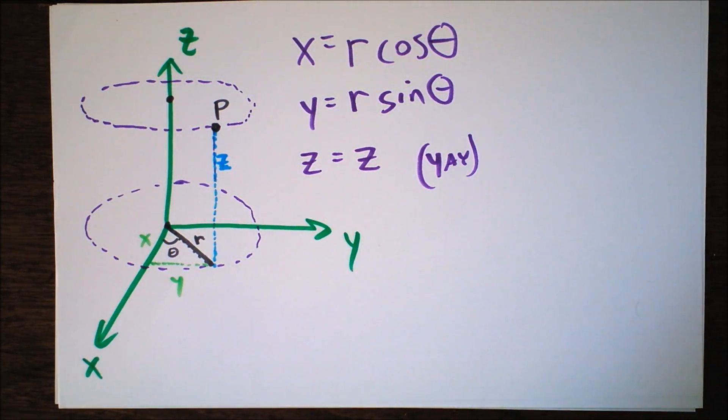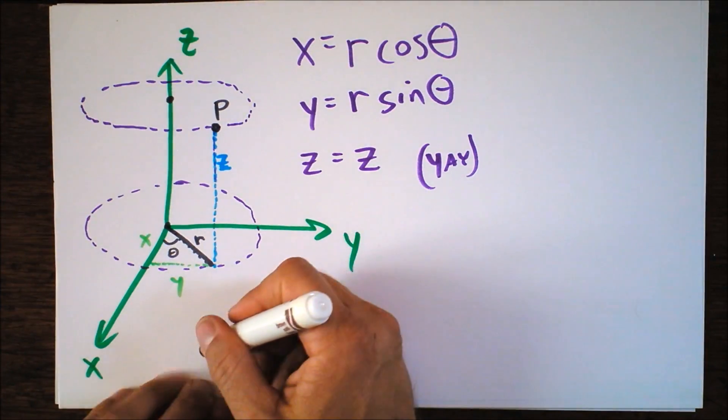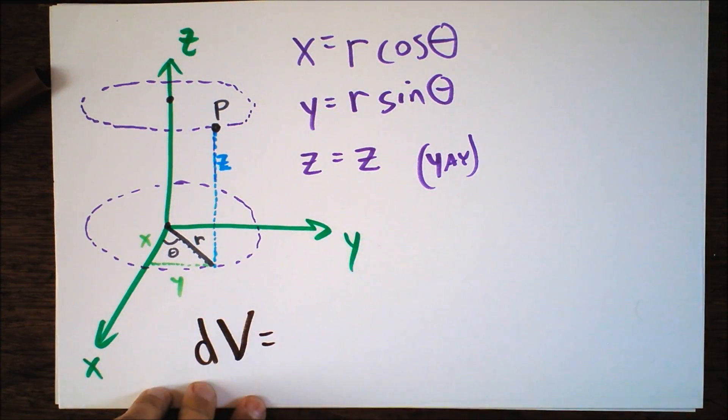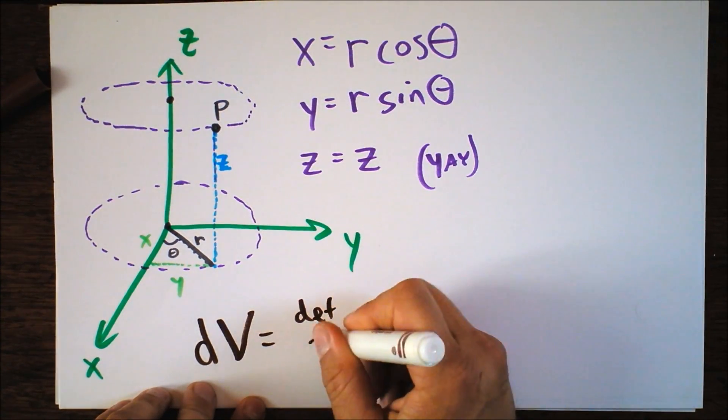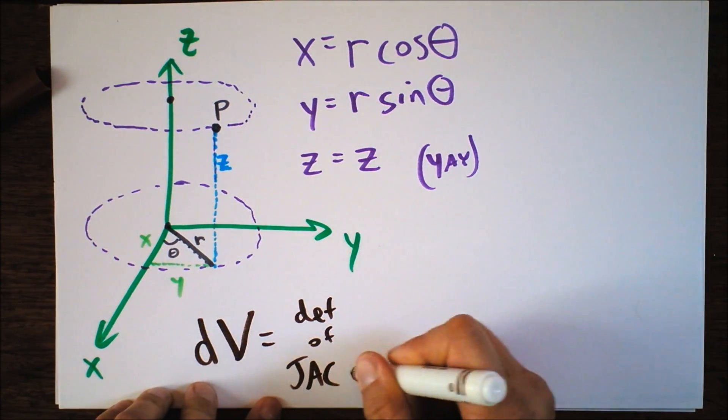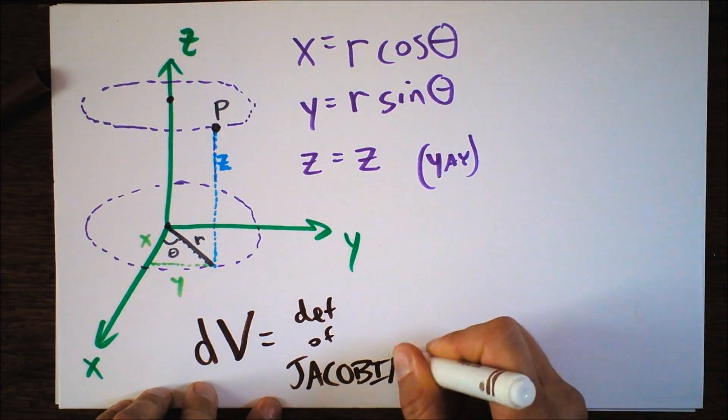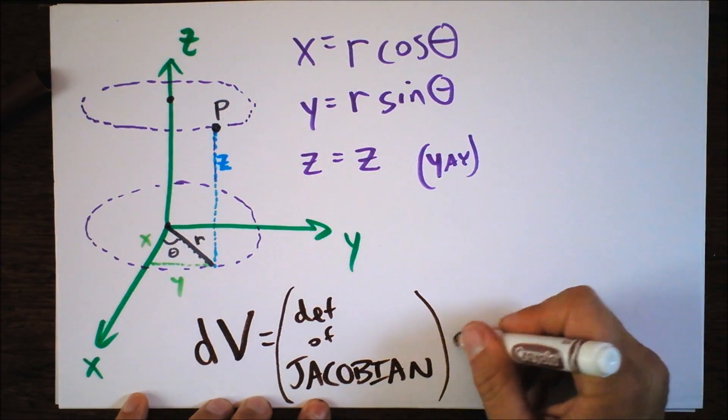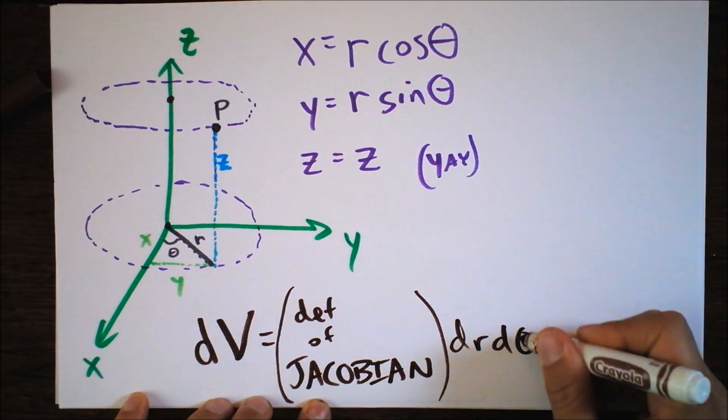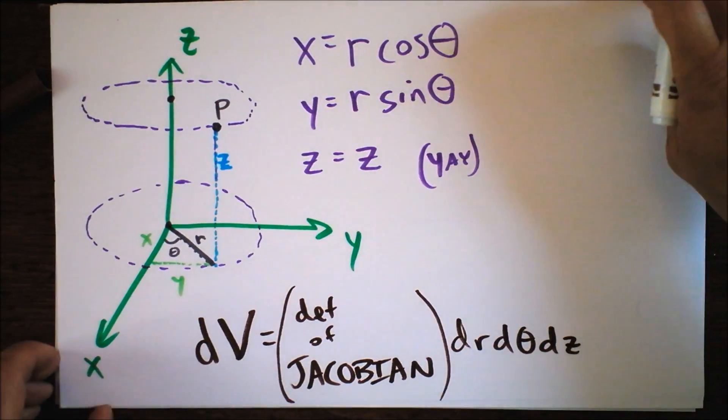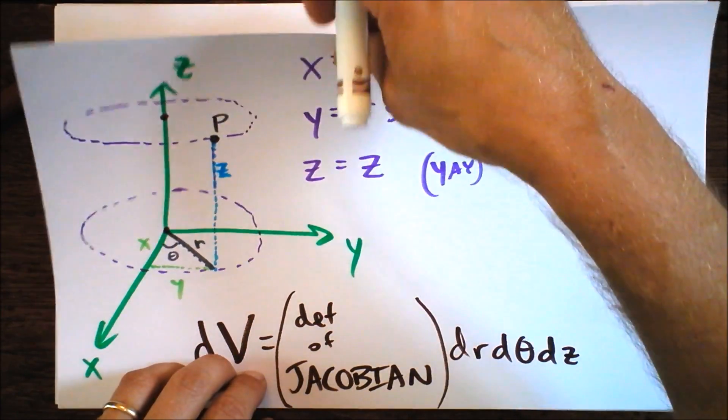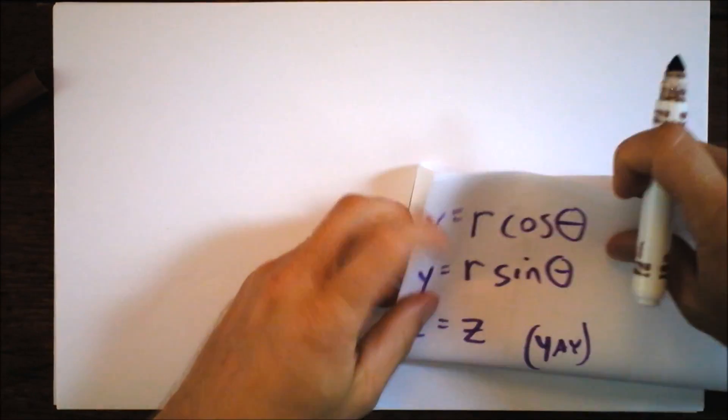X equals, we're talking about that side of this triangle right here. So it's going to be R times the cosine of theta. Y equals R times sine of theta. And Z is Z. Yay! That's why it's so fun, because Z is so special. Now we already know that the differential volume element, dV, is going to be the determinant of the Jacobian times dR dθ dZ. And the determinant of the Jacobian, based on these relationships right here, is pretty fun to calculate. Let's do that now.